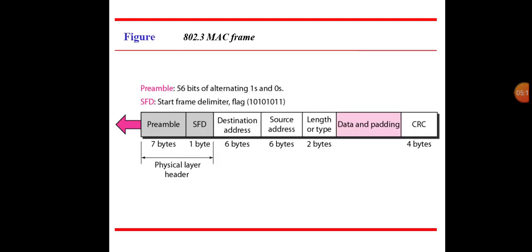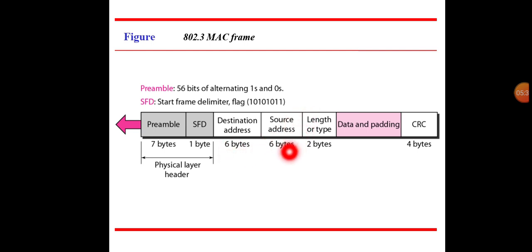MAC sublayer: In standard Ethernet, the MAC sublayer governs the operation of the access method. It also frames data received from the upper layer and passes them to the physical layer. The 802.3 MAC frame consists of: a Preamble and SFD totaling 8 bytes as the physical layer header; destination address (6 bytes); source address (6 bytes); length or type (2 bytes); data and padding; and CRC (4 bytes).